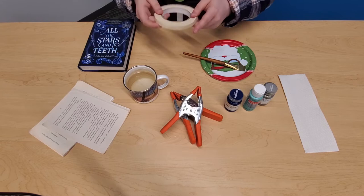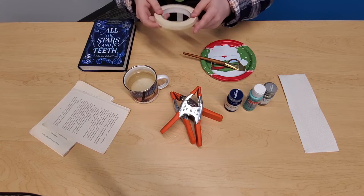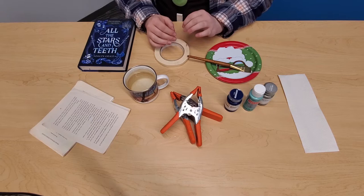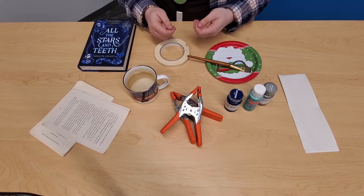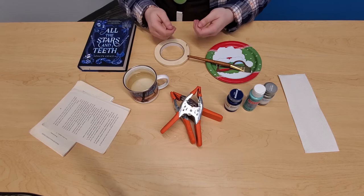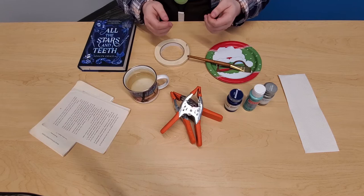You'll also need some sort of tape. I have drafting tape which I like using because it doesn't stick to the book that much. You can also use masking tape or painters tape. If you use either one of those it can help to take a piece and then stick it against something that has lint on it like your jeans or your shirt sleeve something like that just in order to make sure that it's not too sticky.